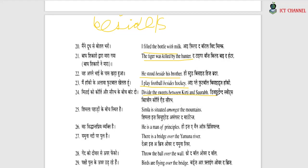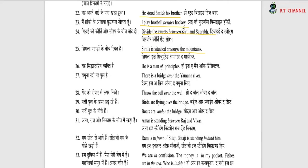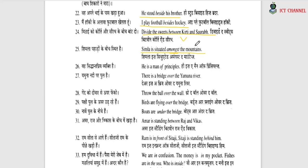'Divide the sweets between Kirti and Saurab.' We use 'between' when we have something shared between two people. 'Shimla is situated among the mountains.' 'Among' means surrounded by many. Between is used for two people or things; among is used when talking about more than two. Shimla is not between two mountains — it is among many mountains.